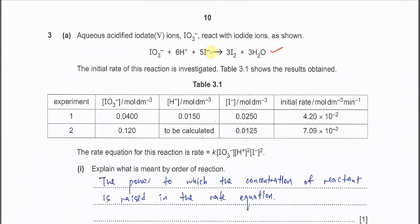Question 3a. Aqueous acidified iodate reacts with iodide as shown in this equation, forming iodine and water. The initial rate of this reaction is investigated, and table 3.1 shows the results. The rate equation is given as: rate = k × [IO₃⁻] × [H⁺]² × [I⁻]².